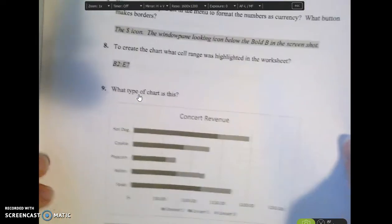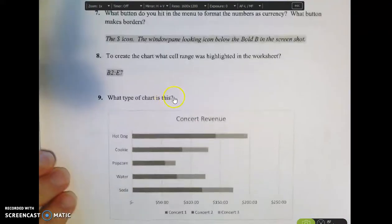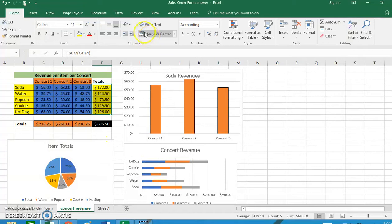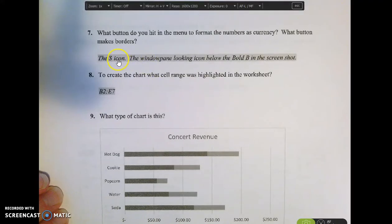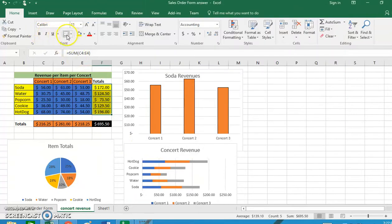All right. The next thing that they ask you in the guided notebook is what button do you hit in the menu to format the numbers as currency. And if you notice in your spreadsheet at the top of the spreadsheet, there's a dollar sign. And dollar sign will format it as a currency. So in order to format something as currency you'll click on the dollar sign. In order to make borders on your spreadsheet, you would click on this button right below the bold key. Here's the bold key.